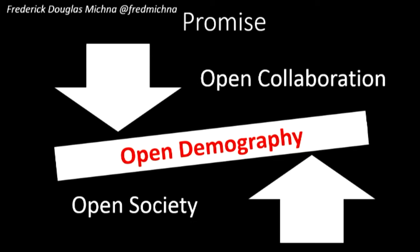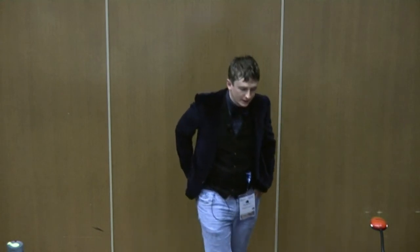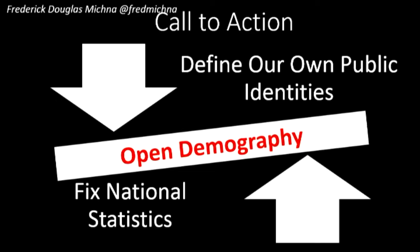The promise of open demography has two sides — open collaboration and open society. If we're to create open demography, it would have to balance the two. The first calls us to define our own public identities by creating our own demographics, and the second calls us to try and fix national statistics.